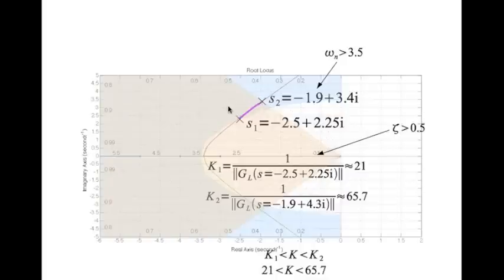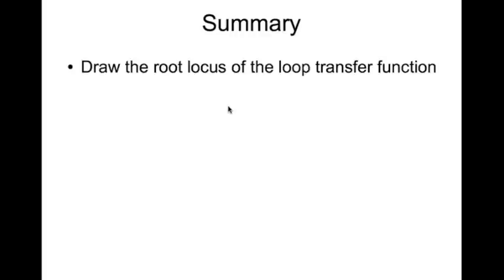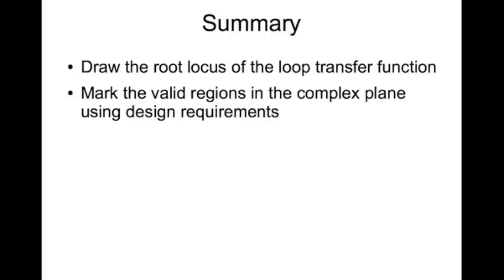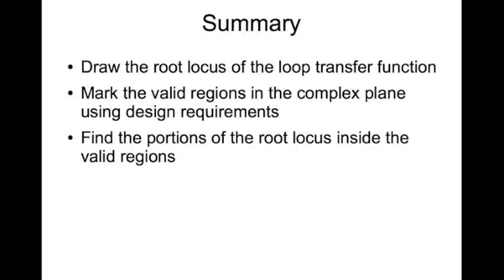For this range of K you will have closed loop poles on this portion of the root locus which is inside the valid region. That's pretty much what parameter selection design using root locus is. So in summary, you need to draw the root locus of the loop transfer function. Mark the valid regions in the complex plane using design requirements. Find the portions of the root locus inside the valid regions, and find the limits of the parameter K. That's pretty much the design process.